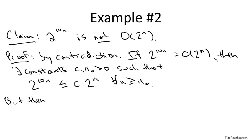So if we divide both sides by two to the n, which is a positive number since n is positive, what we find would be a logical consequence of our assumption would be that two raised to the nine n is bounded above by some fixed constant c for all n at least n naught.